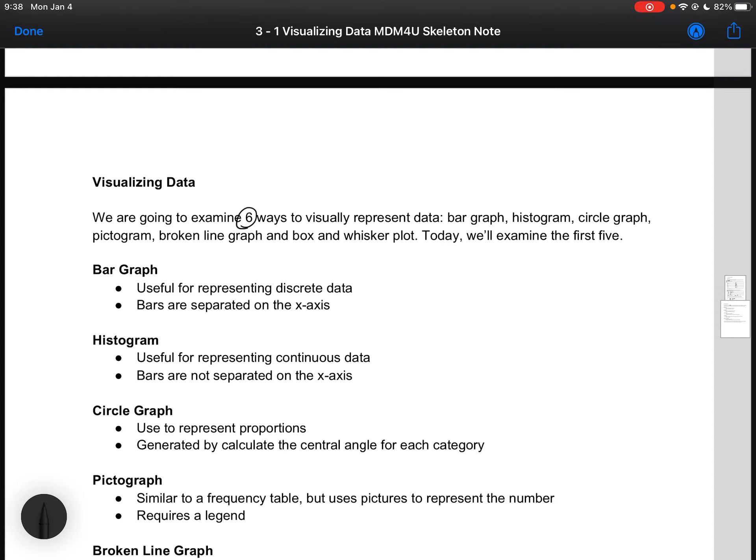So a bar graph is useful for representing discrete data and bars are separated on the x-axis. This is the important part. A histogram is useful for representing continuous data, so they are not separated on the x-axis.